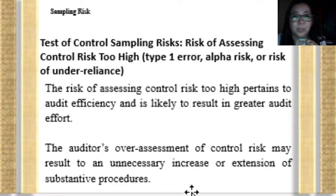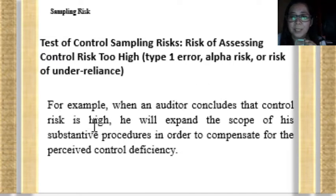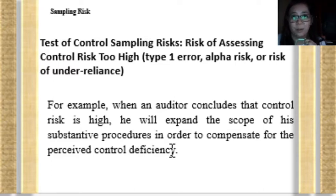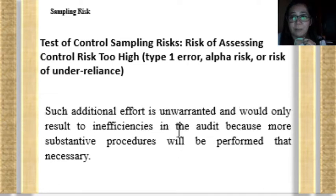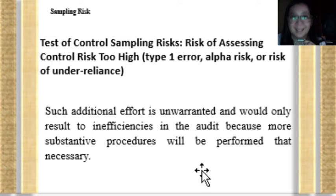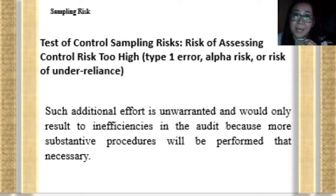The auditor's over-assessment of control risk may result in an unnecessary increase or extension of substantive procedures. When an auditor concludes that control risk is too high, he will expand the scope of his substantive procedures to compensate for the deficiency he assessed in the internal control. Such additional effort is unwarranted and results in inefficiency — more substantive procedures will be performed than necessary, when in fact he should be performing less if he had assessed the control risk correctly.